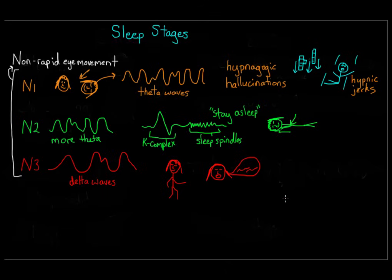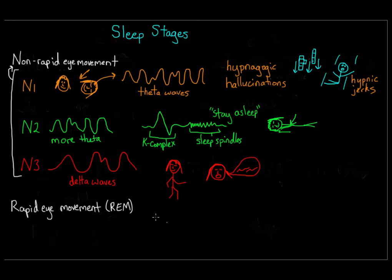The last stage is REM sleep. REM stands for rapid eye movement, because this is when your eyes move rapidly beneath your lids. Most of your other muscles are paralyzed during this stage, which is actually a good thing because most dreaming occurs during REM sleep — if you weren't paralyzed, your muscles might act out whatever you were dreaming about, which could be unsafe depending on what type of dreams you have.